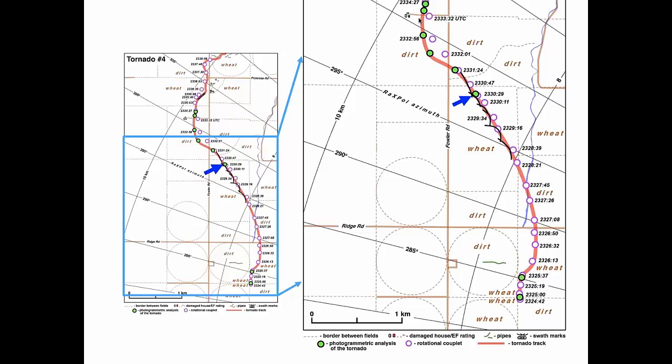Tornado 4's track is shown from beginning to about halfway down. The brown dashed lines are field boundaries. I've labeled the field characteristics so you'll know what's being lofted when I present the debris cloud. The red line is the tornado track, circles show tornado location with timestamps, and the thin black lines are azimuth and range rings from RAXPOL. A blue arrow points to the time I'm going to show you: 23:30:29.